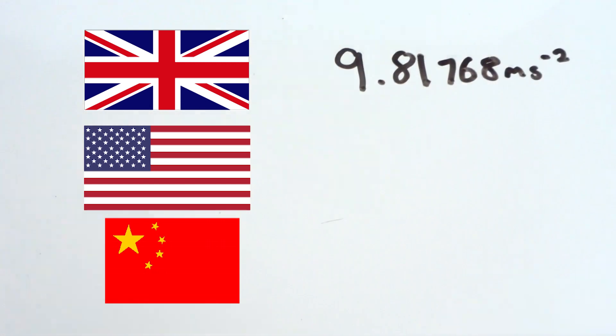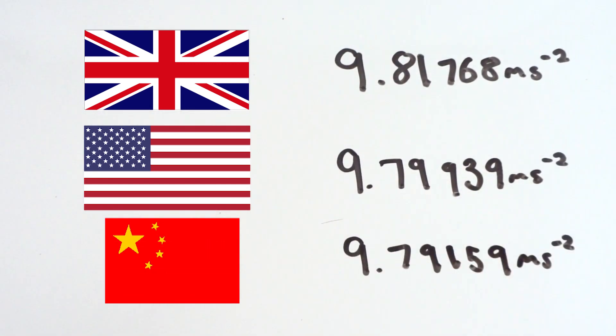The gravitational field strength is different depending on what country you're in. For example, in the United Kingdom gravity is 9.81768 meters per second squared. Compare that to 9.79939 in the United States, or 9.79159 in China.